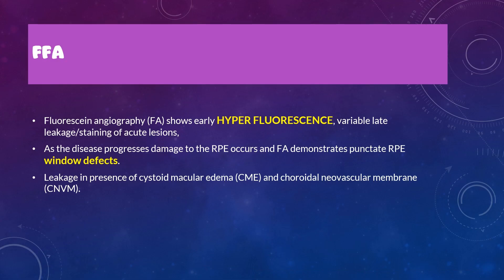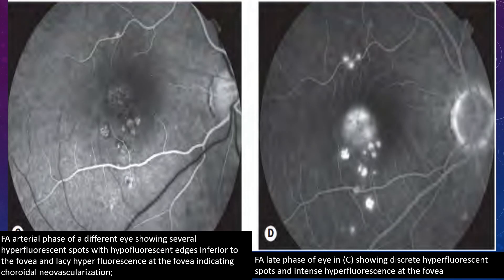On fundus fluorescein angiography in PIC, you will see early hyperfluorescence followed by late hyperfluorescence. Unlike multifocal choroiditis where you see hypo followed by hyperfluorescence, in PIC you see hyper followed by hyper. In later stages with atrophy, there is hyperfluorescence due to window defects. In the early phase, lesions are hyperfluorescent with a hypofluorescent border; in late frames, they are totally hyperfluorescent. Any associated CNVM shows late leakage hyperfluorescence.